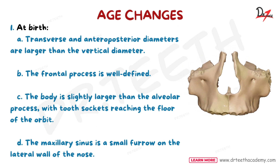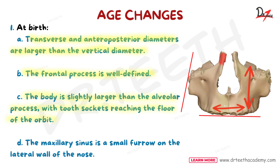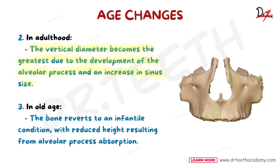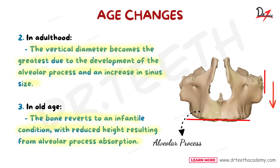Let's talk about age changes. At birth, transverse and antero-posterior diameters are larger than the vertical diameter. The frontal process is well defined. The body is slightly larger than the alveolar process with the tooth sockets reaching the floor of the orbit. The maxillary sinus is a small furrow on the lateral wall of the nose. In adulthood, the vertical diameter becomes the greatest due to the development of the alveolar process and an increase in the sinus size. In old age, the bone reverts to an infantile condition with reduced height resulting from alveolar process absorption.